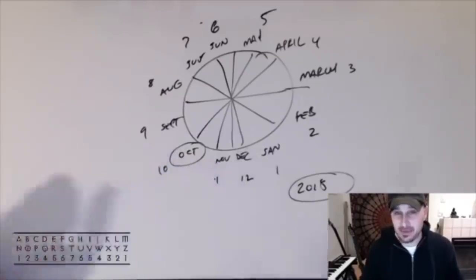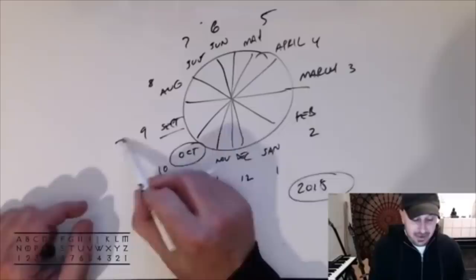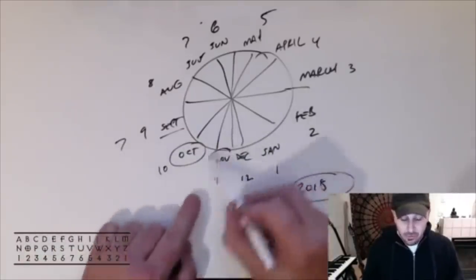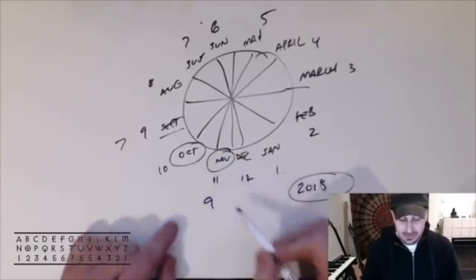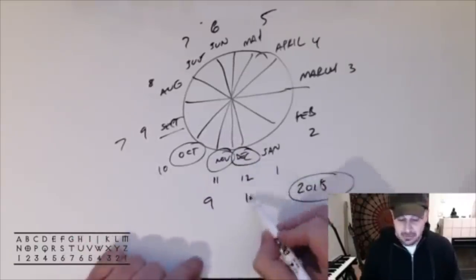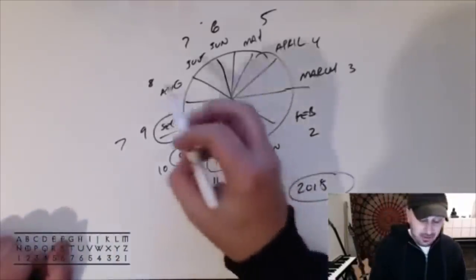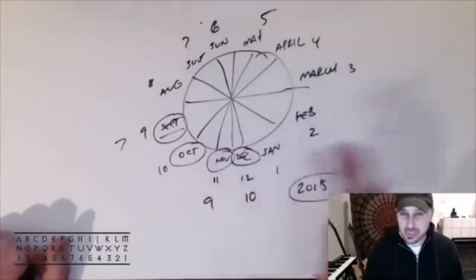So we have to ask, why is the eighth month, literally signified by October meaning eight, the tenth month of the year? Sept means seven and yet it's the ninth month of the year. Nov means nine and yet it's the eleventh month. Dec means ten and yet it's the twelfth month.